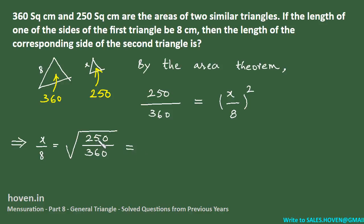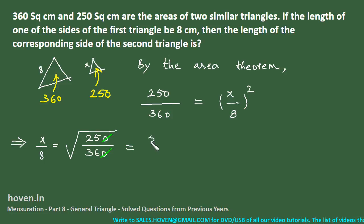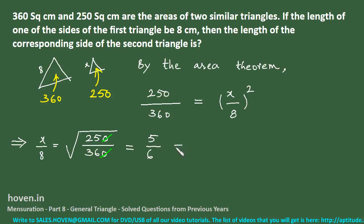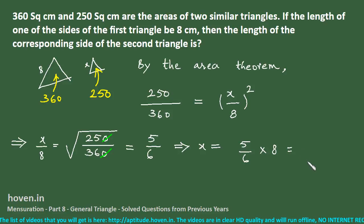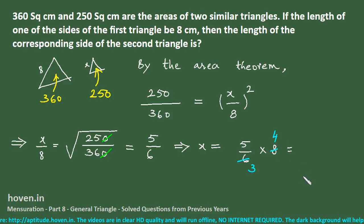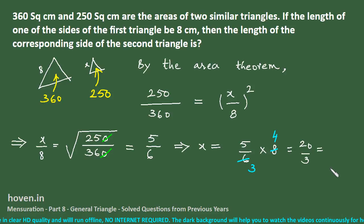From x/8 = 5/6, we get x = 8 × 5/6 = 40/6 = 20/3, which equals 6 and 2/3. So the length of the corresponding side of the second triangle is 6⅔.